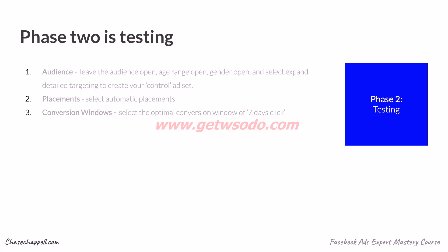In phase 2, we are going to want to set up our control audience. First, we need to cover the audience types we want to create. The initial audience we want to start with is the control, and the control audience is an open audience — meaning we don't select any interest behaviors or anything like that. We leave age open, gender open, and we expand detail targeting. This is going to allow the algorithm to have a huge audience to look at, and it will be able to get results and automatically optimize on its own by targeting only people who are most likely to convert.